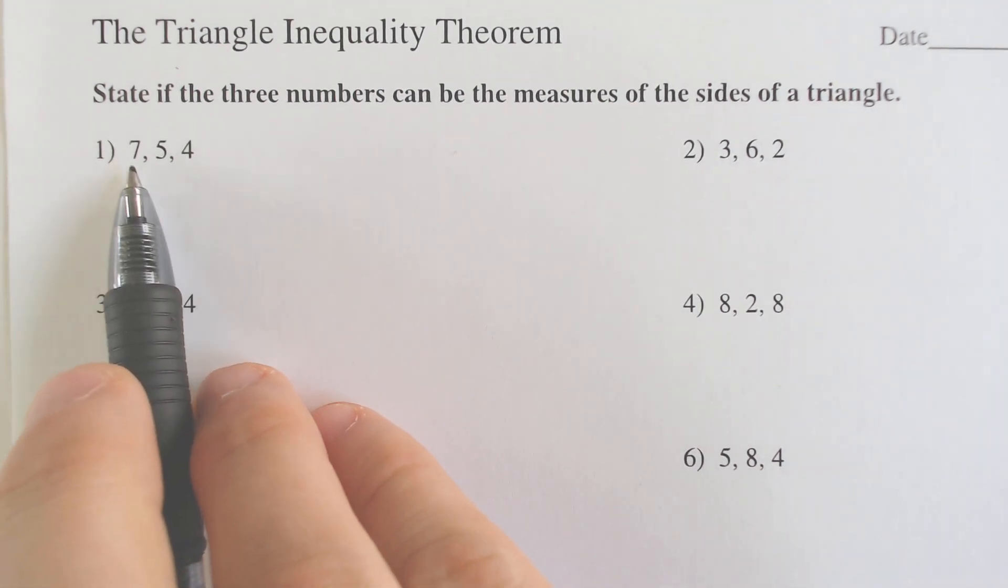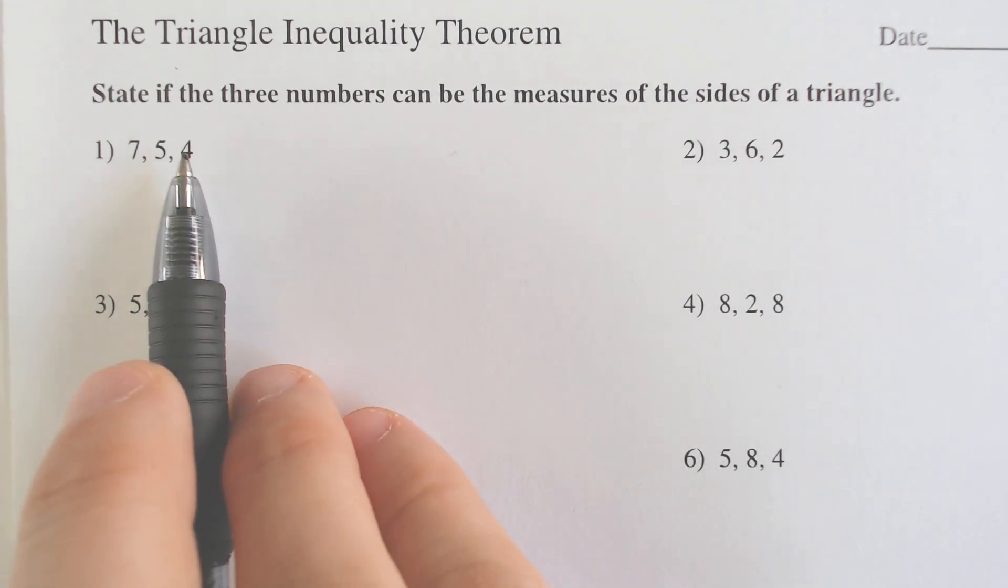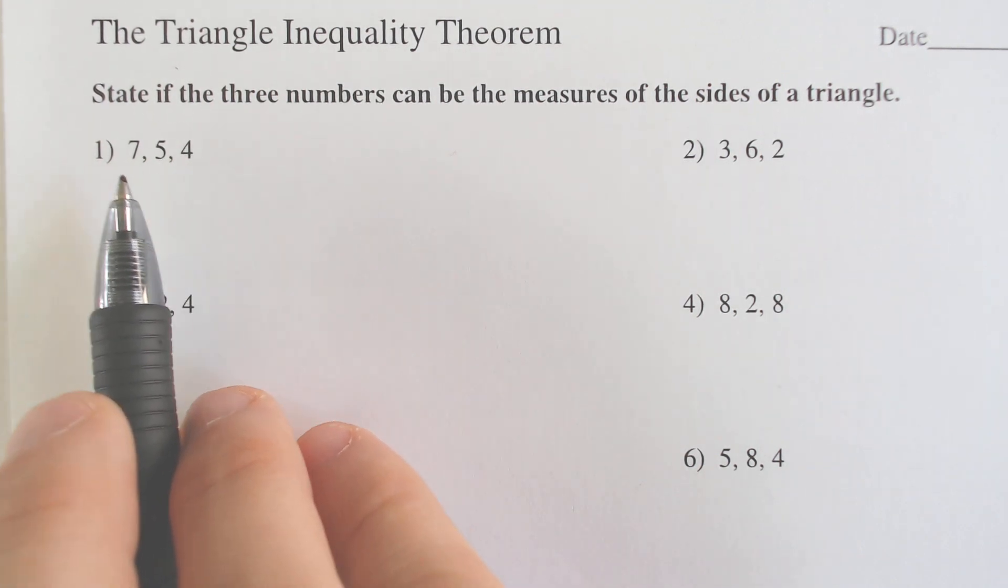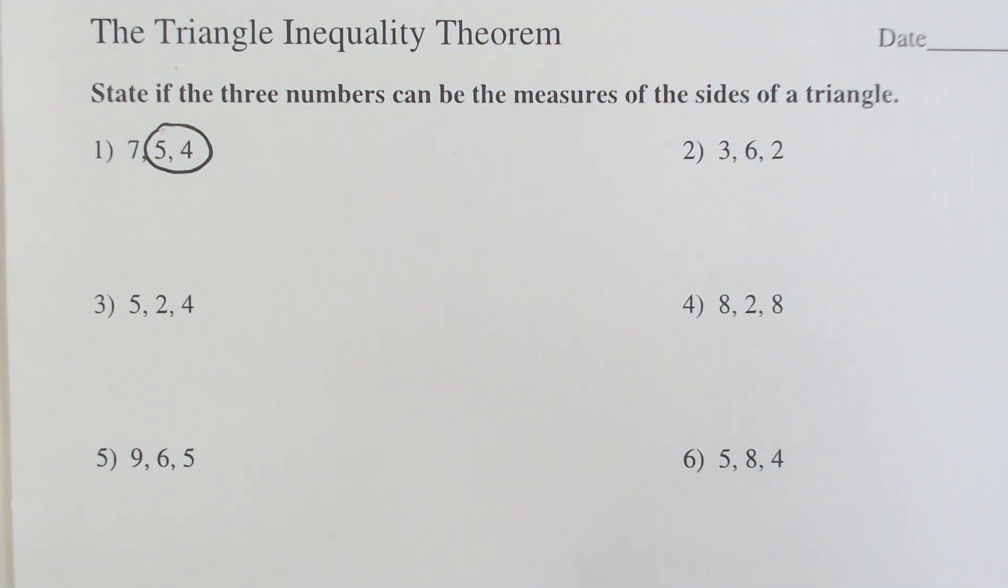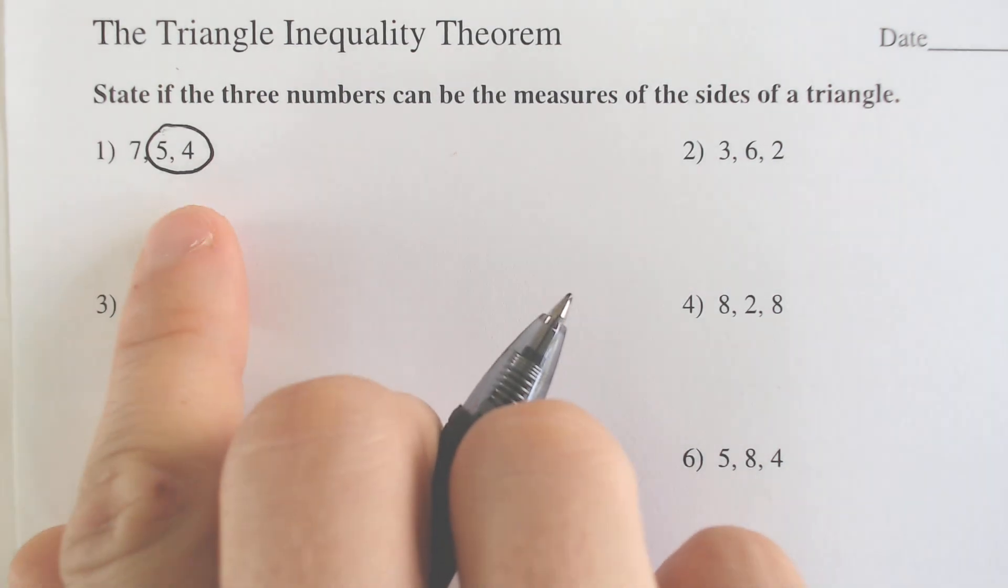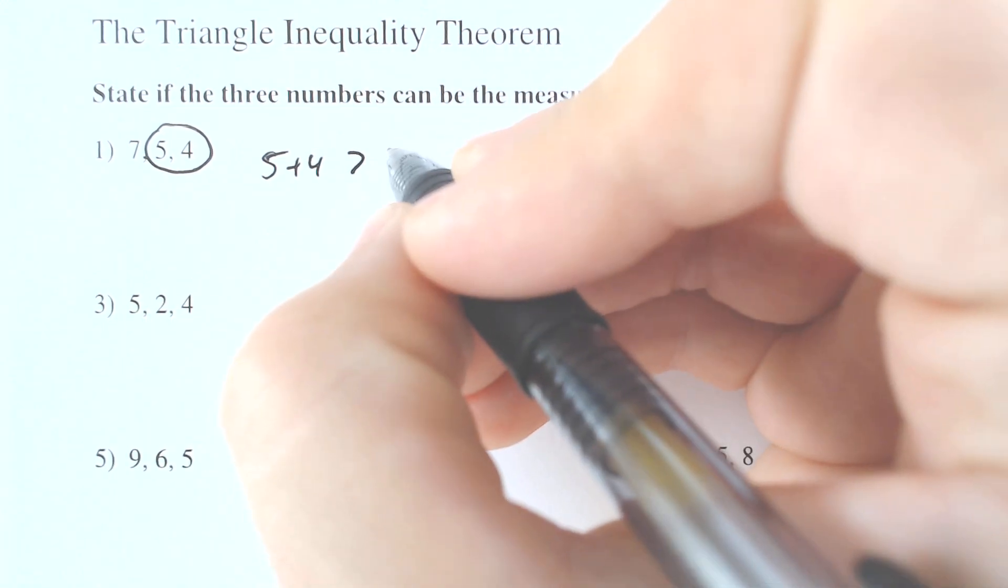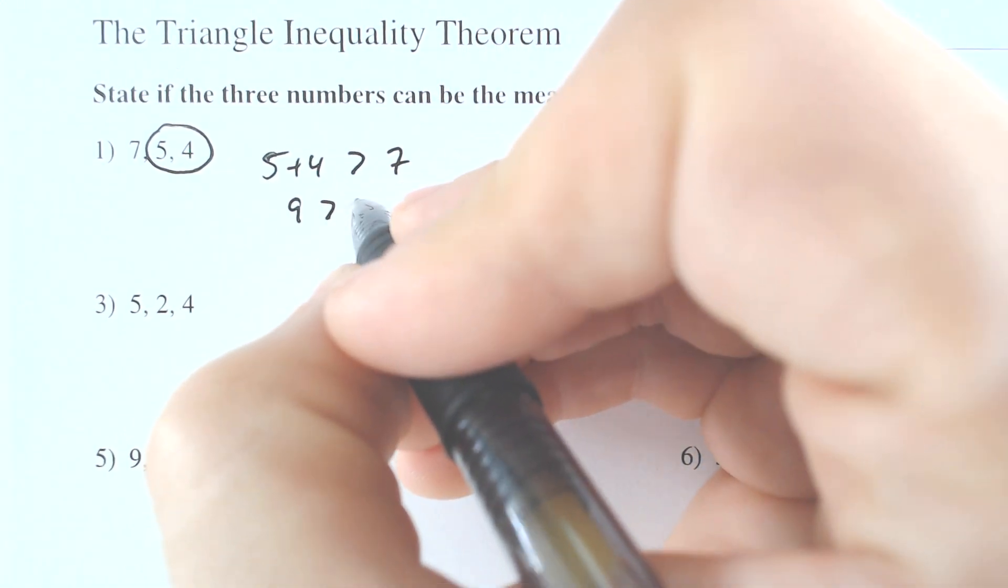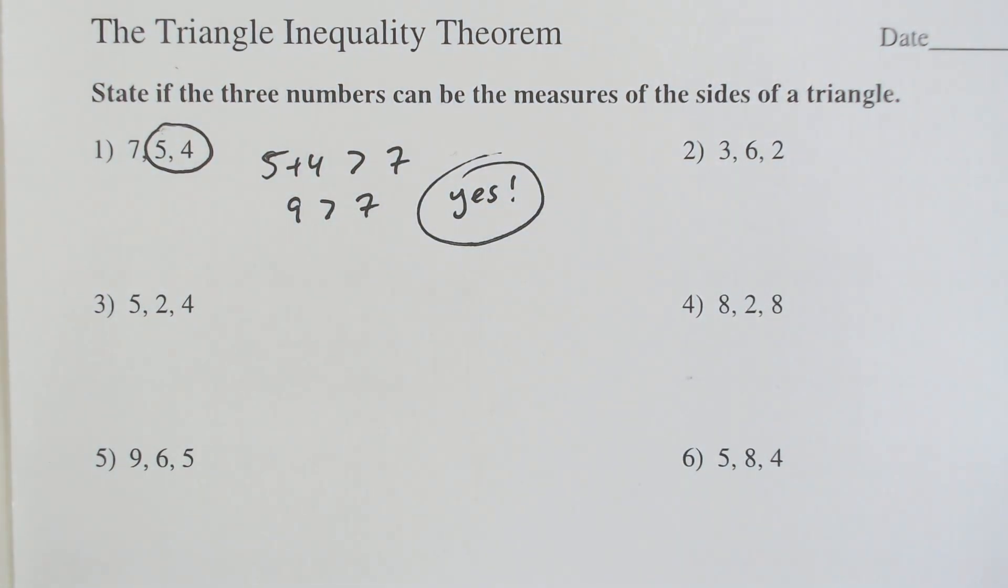So when you have two sides of a triangle provided, if you want it to be a triangle, you need the two shorter sides to be more than the longest side. So if we take the 5 and the 4, which are parts of a triangle here, and if we add those up, are they more than 7? And last time I checked, 5 plus 4 is greater than 7 because 9 is bigger than 7. So yes, this can be, in fact, a triangle.